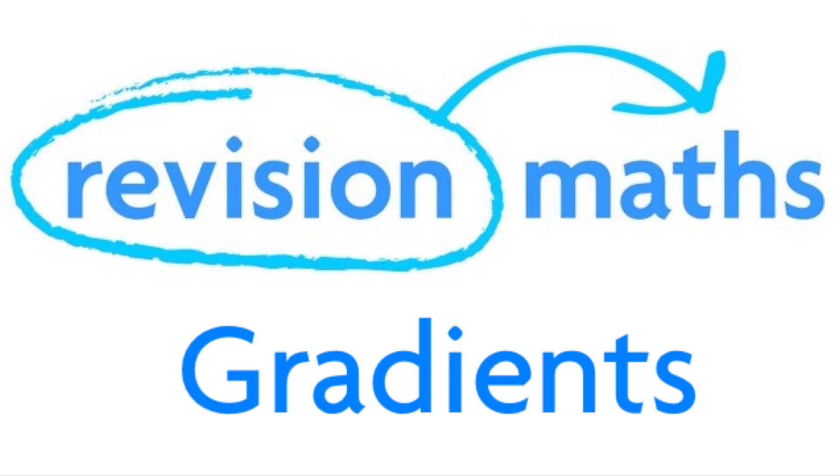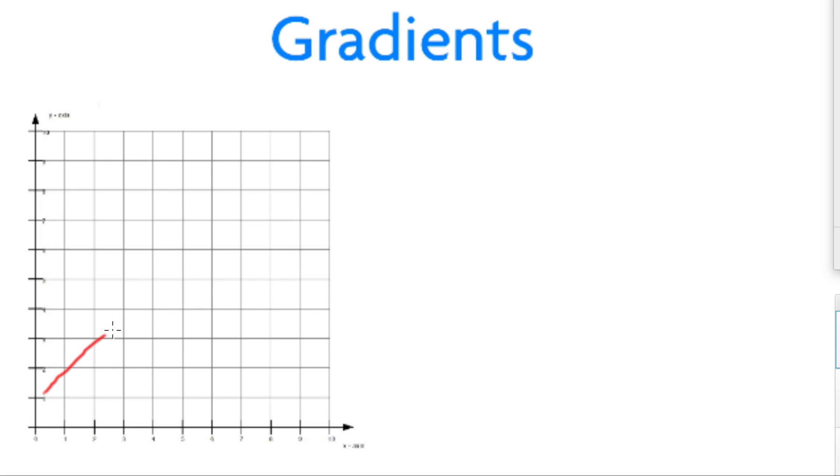Hi, and welcome to another video from revisionmaths.com. This video is on gradients in graphs. The term gradient is simply a different term for the steepness of a slope. A positive gradient means a slope going upward, while a negative gradient means a slope goes downwards.